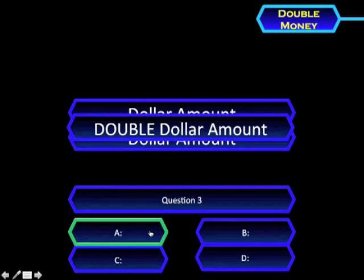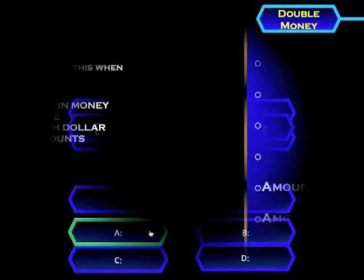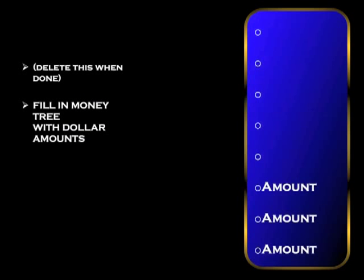Then you just hit next a few times and that brings you here. Here you would fill in the amounts already been used. In this part over here, just delete that once you've done it, because it looks kind of stupid once you've gone through all the trouble to fill it in and you still have that tutorial instruction there.